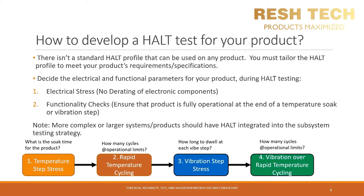Option two is to have a functional test only, to ensure that the device is fully operational at the end of a soak or vibration stress step. You should include a functional test step in your HALT program regardless of whether you perform an electrical stress test in combination with the HALT temperature test — this is to detect abnormalities that indicate when you have reached your product's operational and failure limits. At a minimum, power on your product and have it run in an idle state, along with performing a functionality check to confirm all functions are still operational at the end of each temperature and vibration step. More complex or larger systems should have HALT integrated into the subsystem testing strategy rather than at the full system level.